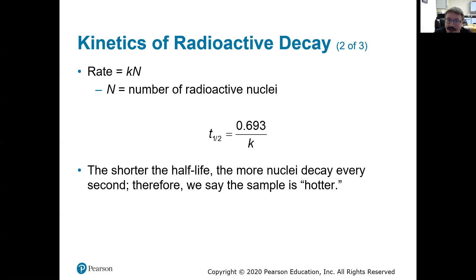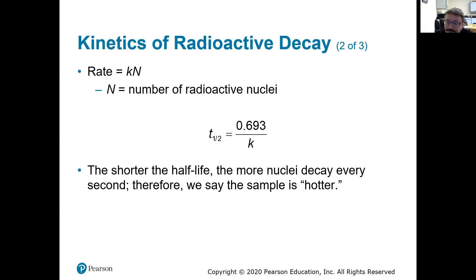The half-life equation, like first-order reaction kinetics, is independent of concentration, so we don't have to worry about that changing over time or depending on how much material we have. That's straight out of chapter 15. The only thing we're really concerned with is K, the rate constant — the greater K is, the shorter the half-life and the faster that decay occurs.